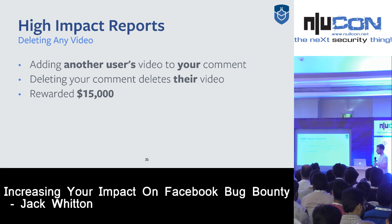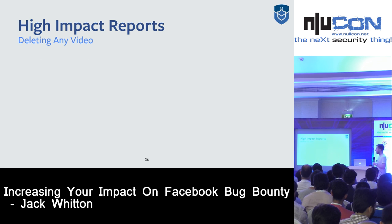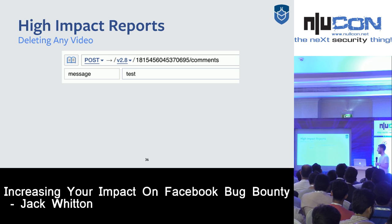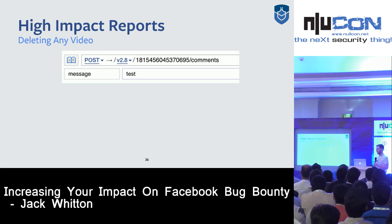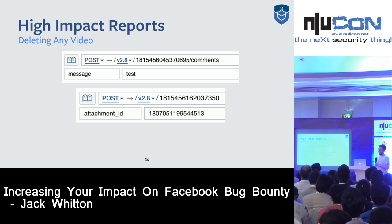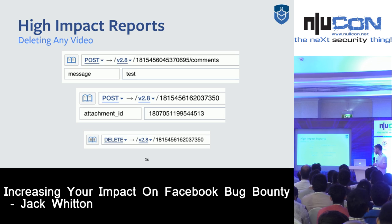The way to exploit this was using the Graph API Explorer. You set the request to the post endpoint using the post ID, post to the comment endpoint and create a comment yourself, then once you've created it you edit the comment. The attachment_ID is the video — normally it would be the video you've uploaded, but in this case you set it to another user's video ID. Then you simply issue a delete request to that endpoint and this would delete the comment and cascade down to delete the video.